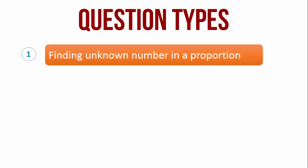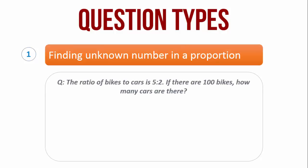Let us now look at some types of questions. Finding unknown number in a proportion. The ratio of bikes to cars is 5 is to 2. If there are 100 bikes, how many cars are there?